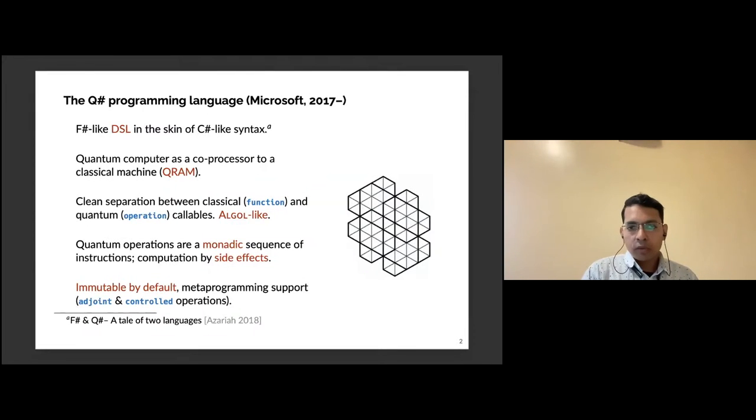QSharp is a programming language for quantum computing from Microsoft, announced in 2017. It's really an F#-like language, but on the cover it looks like a C#-like language. There's a nice blog post by John Azaria explaining the evolution. The model used by the language is the usual QRAM, where the quantum computer is considered as a co-processor, and it has several interesting Algol-like features.